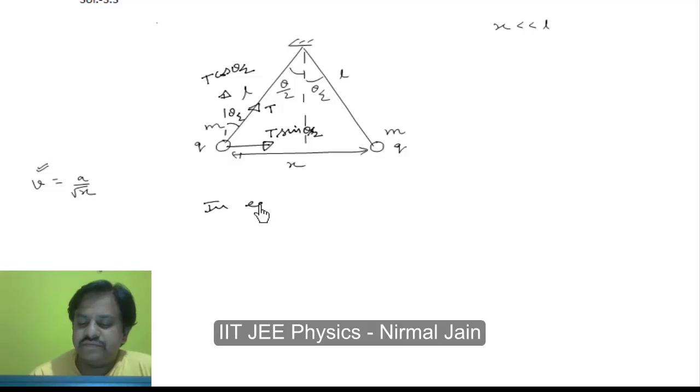In equilibrium condition, if we talk of equilibrium in X direction, then we will say that there must be some electrostatic force acting on this ball or sphere and T sin theta by 2 should be equal to electrostatic force which is K q1 q2 by distance which is X square. And for equilibrium in Y direction, we should see T cos theta by 2 is equal to mg.